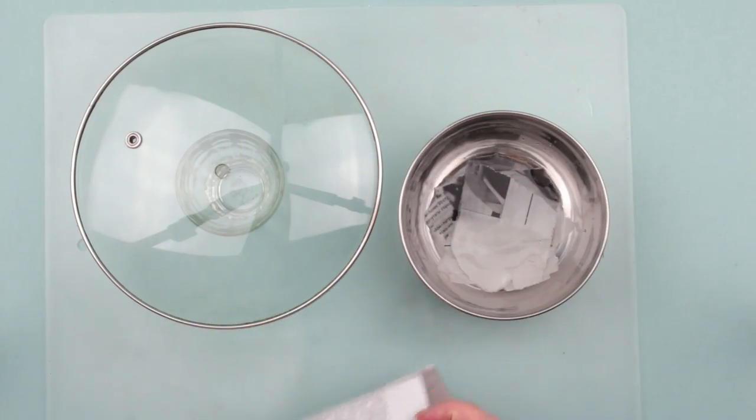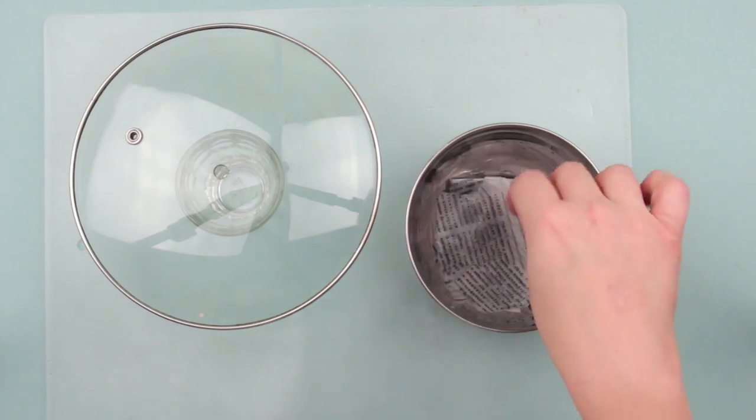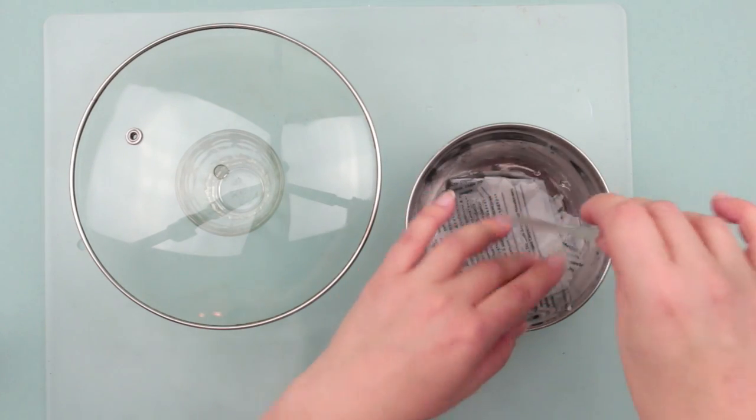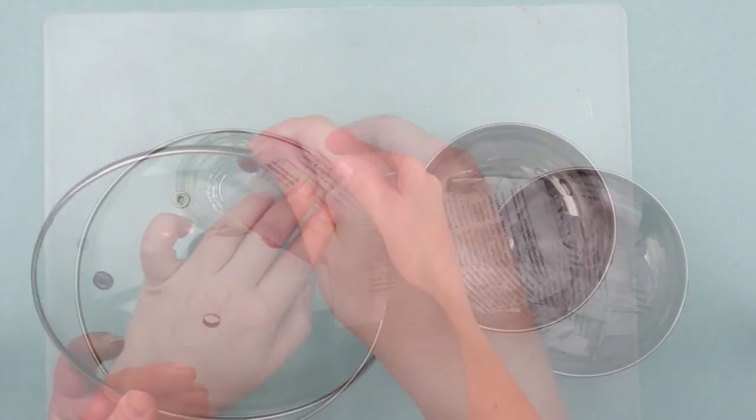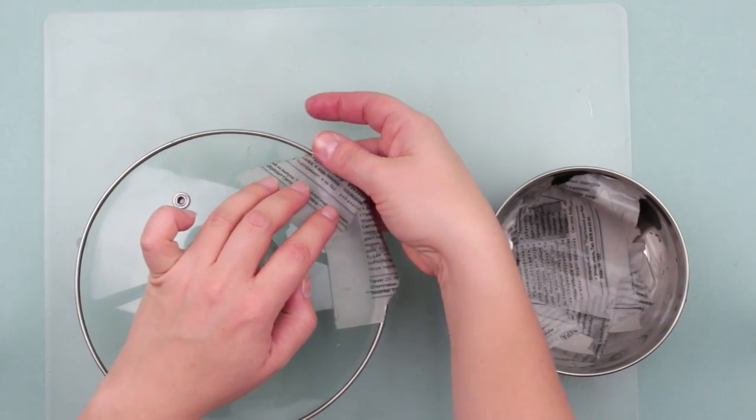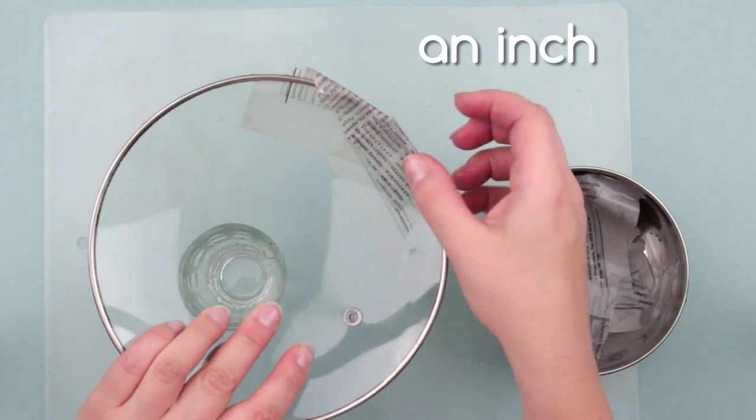Soak the paper in the water for several minutes. Take a piece. Remove the excess water. Attach to the lid starting with the edge. Be careful to wrap the lid edge with the paper coat covering about an inch or so off of the back.